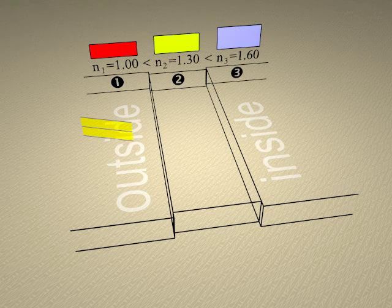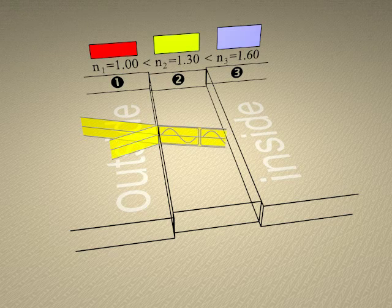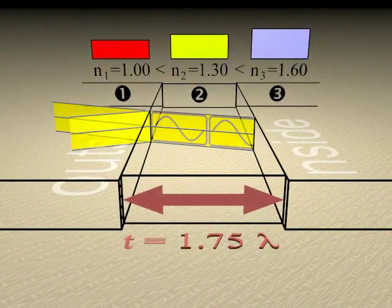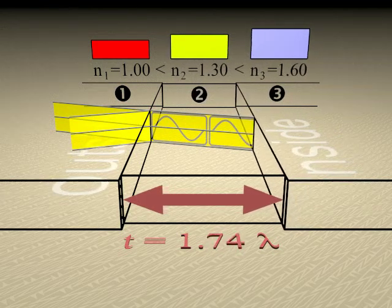Incident light will move in from the left and proceed through the arrangement for the demonstration. The width of the middle block is proportionate to the thickness of the thin film as measured in multiples of refracted wavelengths.